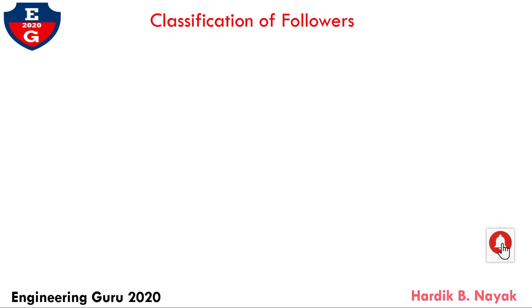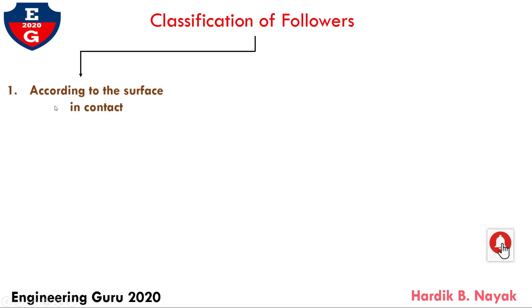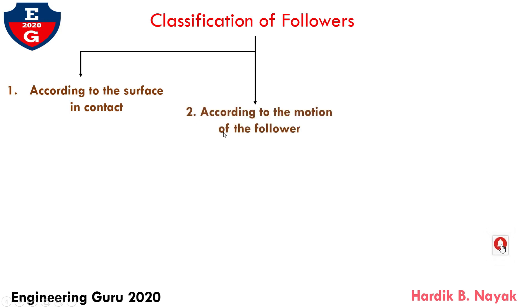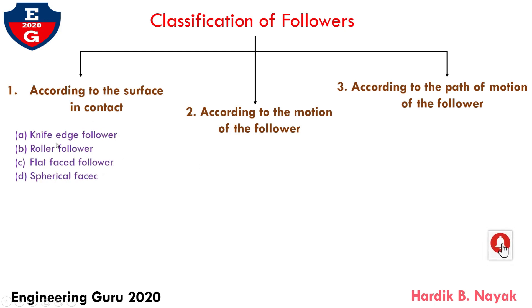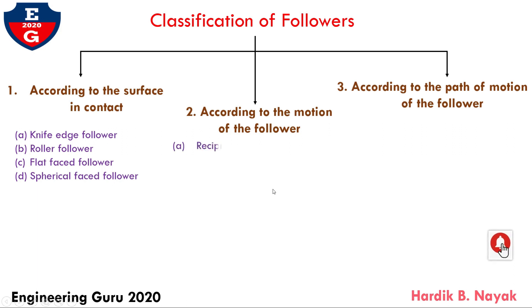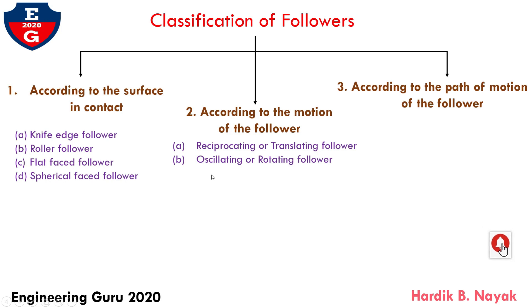Now, classification of follower. First, according to the surface in contact. Second, according to the motion of the follower. And third, according to the path of motion of the follower. According to surface of contact, it is divided into four parts: knife face follower, rolling follower, flat face follower, and spherical face follower. The second type is divided into two types: reciprocating follower and oscillating follower. And the third type divides into radial follower and offset follower.